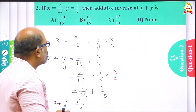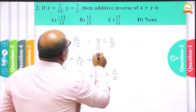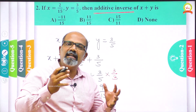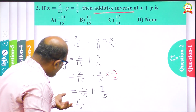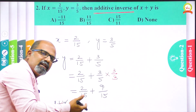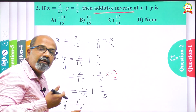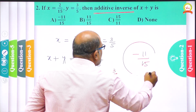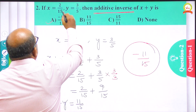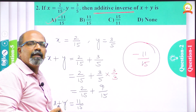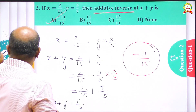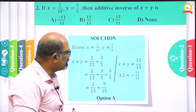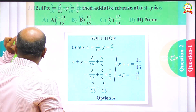But this is not the final answer, because we need to find the additive inverse, not just x + y. The additive inverse is the negative of the given number. We got 11/15 for x + y, so the additive inverse is −11/15. That is the answer, and it corresponds to option A. Let us verify — option A, and the additive inverse is −11/15, as we got.